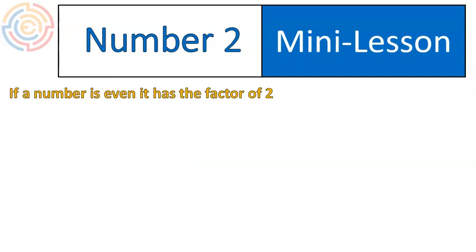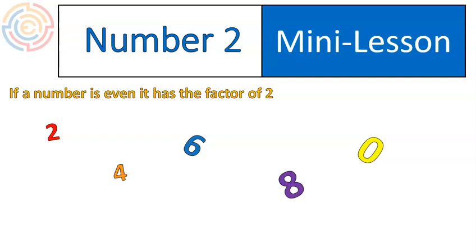Number 2. If it's an even number, it has a factor of 2. That means the very last digit is going to be a 2, 4, 6, 8, or 0. If it ends in one of these numbers, then it has a factor of 2.